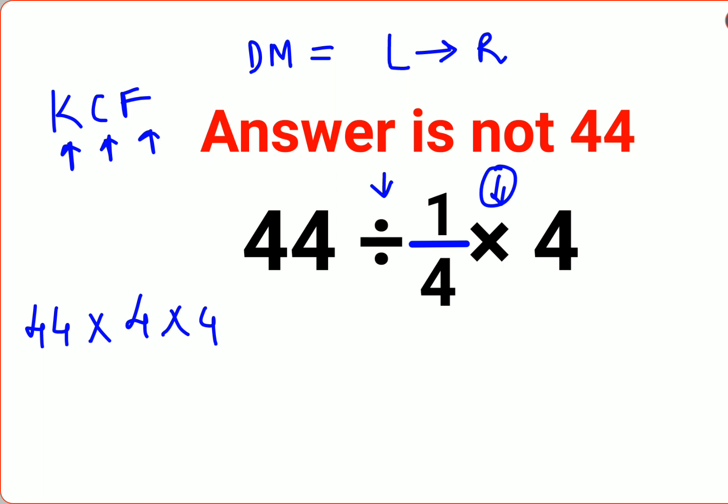So now 44 into 4 gets you what? 176 into 4 gets you 604. So I hope this is very very clear to everyone. Sorry, the answer is supposed to be 704, not 604, 704.